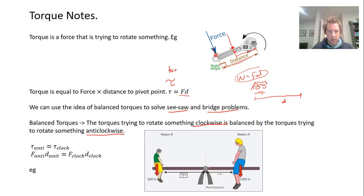Here we have a seesaw. Here's the middle of the seesaw. This person sitting on it forces down on it. It's going to rotate the seesaw down and try to rotate it around. If there's no ground here, it's going to keep going around.